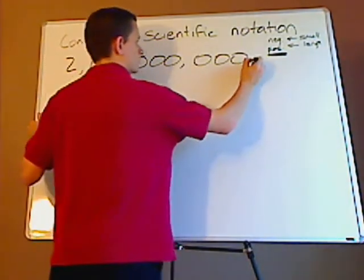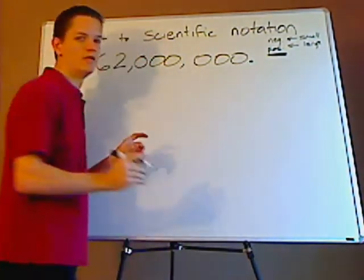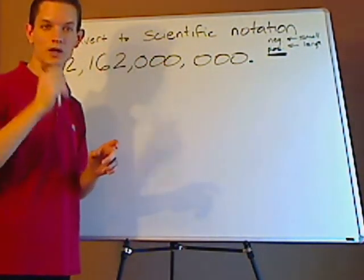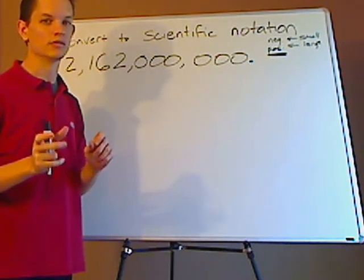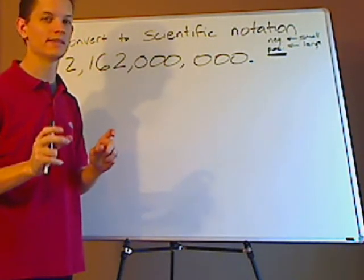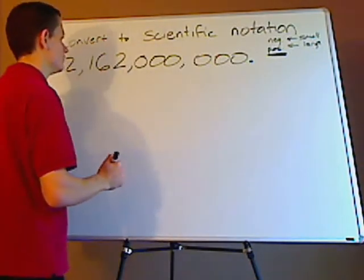So I start with the decimal, and I want to move it so that the number is between 1 and 10, but not including the 10. It can include the 1, but not the 10, so it has to be somewhere in between there.